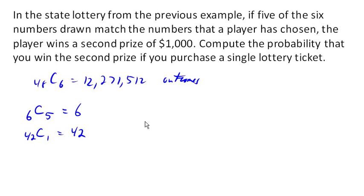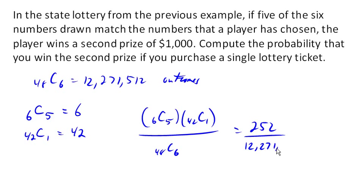So our final probability of winning is going to be, there are 42 times 6 is 252 different ways that we can match five numbers and not match the sixth out of our 48 choose six, out of our 12,271,512 total outcomes. And that gives us a marginally higher probability of winning, though it's still pretty small.